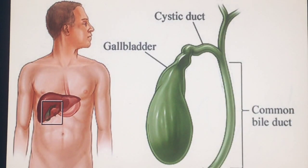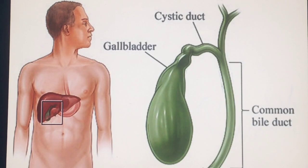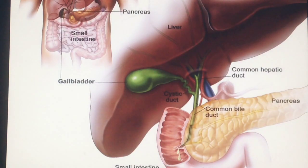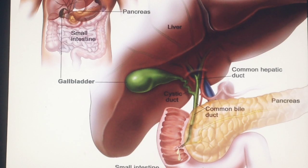The gallbladder is a pear-shaped organ which is present in the right hypochondrium, just below the visceral surface of the liver. It is present in the right lobe of the liver, between the right lobe and the quadrate lobe of the liver.